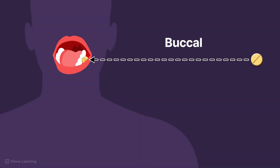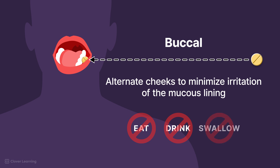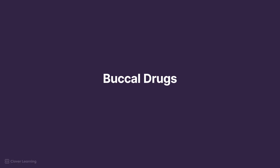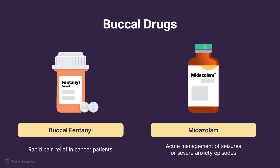When administering medicine buccally, you should alternate cheeks to minimize irritation of the mucous lining of the cheeks. Additionally, instruct the patient not to eat or drink during buccal drug administration and not to swallow the medication. Examples of buccal drugs are buccal fentanyl, used for rapid pain relief in cancer patients, and midazolam, which can be administered buccally for acute management of seizures or severe anxiety episodes.